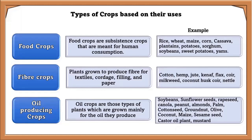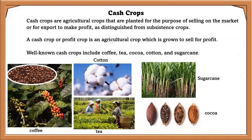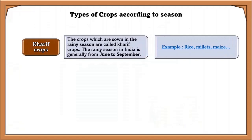Another major type is cash crops. Cash crops are agricultural crops planted for the purpose of selling on the market or for export to make profit, as distinguished from subsistence crops. Well-known cash crops include coffee, tea, cocoa, cotton, and sugarcane.